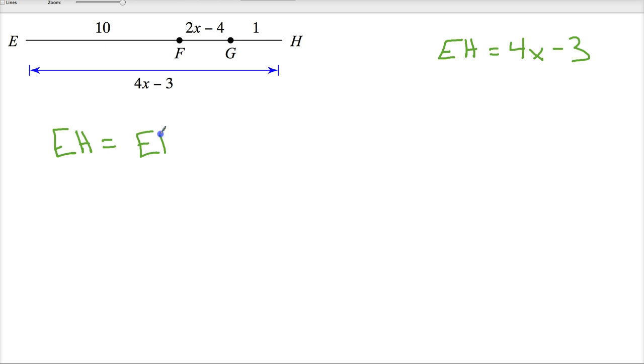So EF plus FG plus GH. From here, all I'm doing is plugging in their values. So I've got 4x minus 3. EF would be 10 because that's what they have located here.